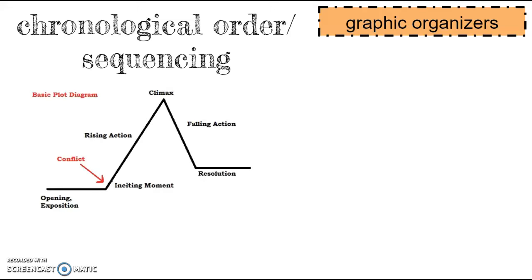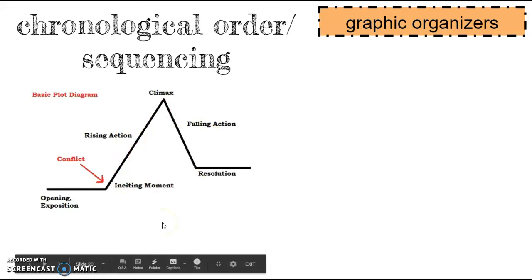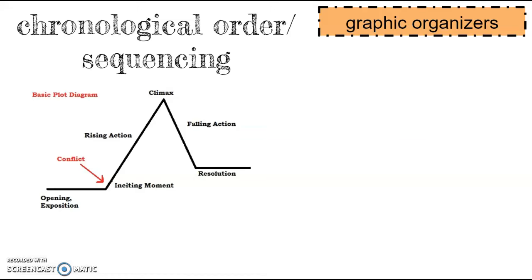So graphically, when we put it together, I have a plot diagram here. This really works more for fiction text when we're reading a story, but we do kind of the same thing. We think about when something happened and how those events went together. We're going to be focused more when we talk about text structure with nonfiction text.